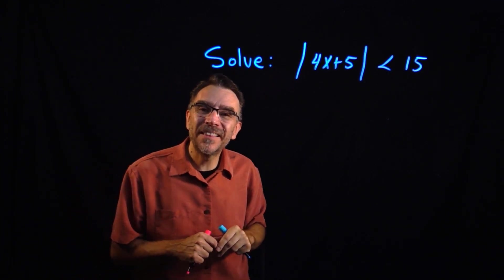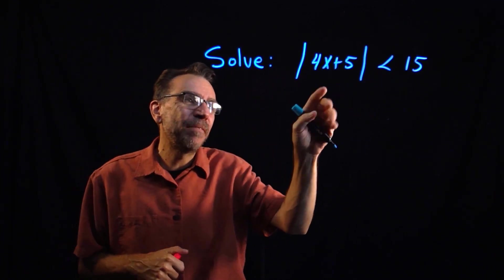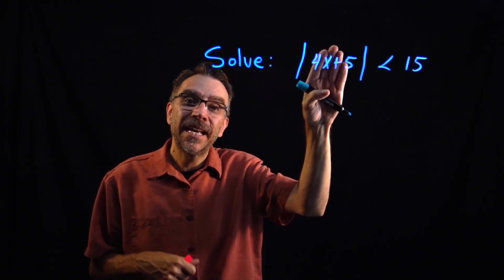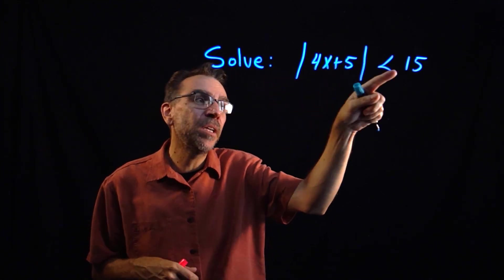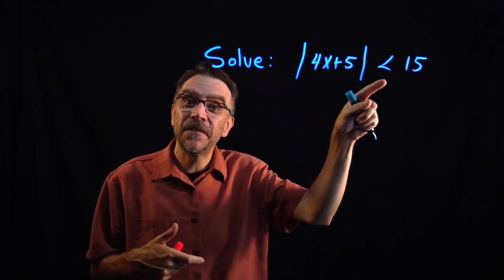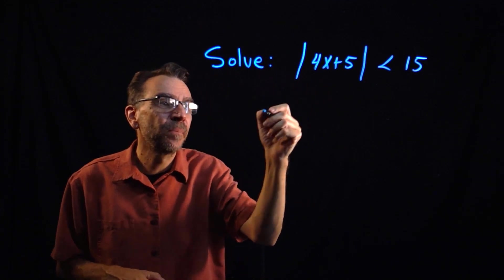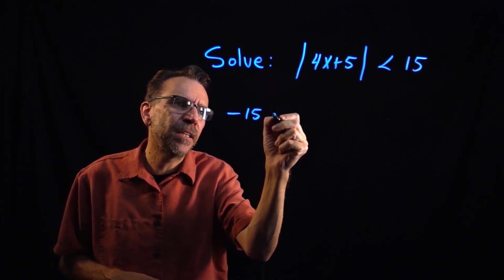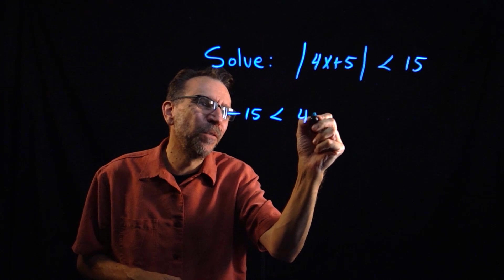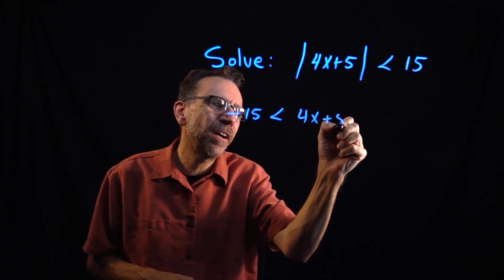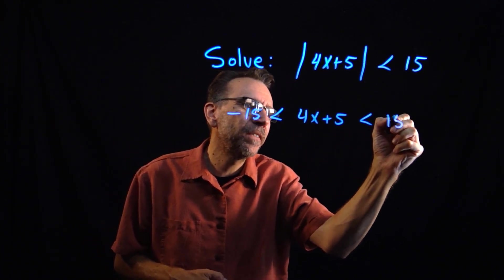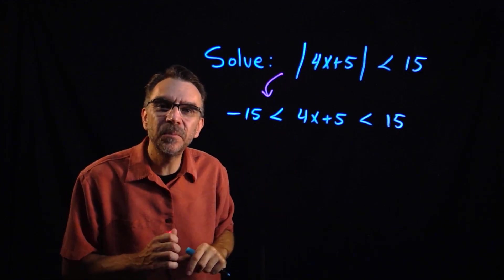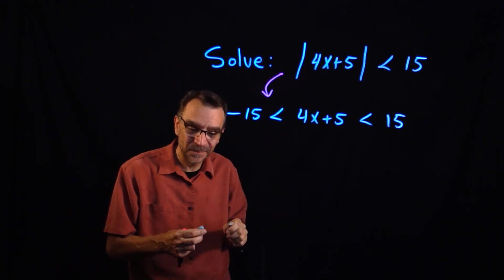We're going to apply the theorem for less than, which says the argument of the absolute value has to be in between plus or minus that number — 15 in this case. So what this means is that negative 15 is less than 4x plus 5, which is less than 15. That's what that absolute value means as a compound inequality.